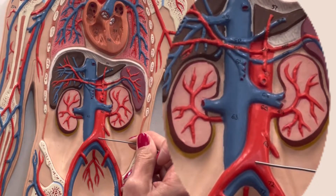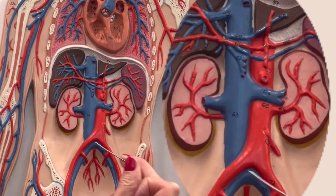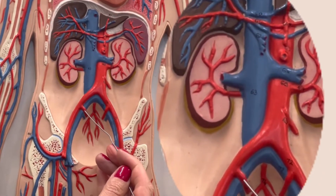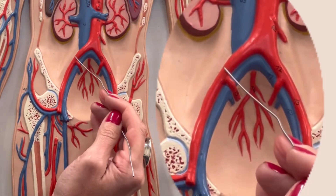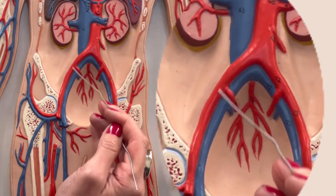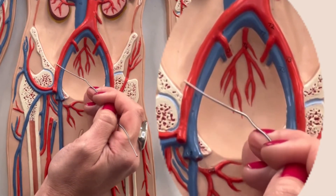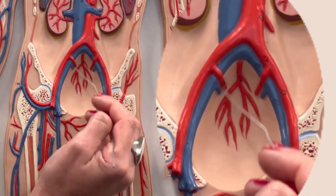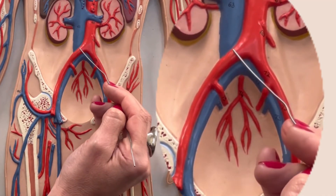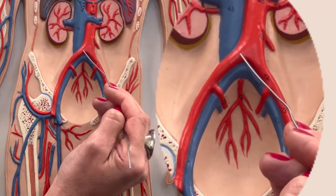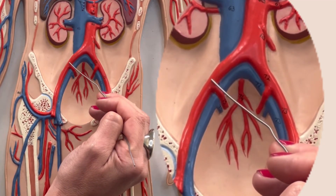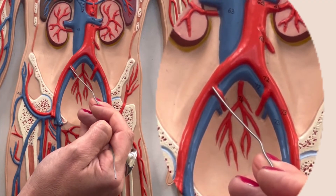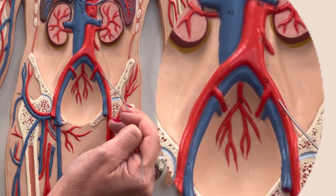The abdominal aorta ends by splitting into two arteries, which are named the common iliac arteries. The common iliac arteries split — that's why they were named common. When they split, you have the external iliac artery on the external aspect and the internal iliac artery, which stays internally, going towards the pelvic cavity. This is the right side and this is the left side, so this would be the right common iliac artery. After it splits, we have the right external iliac artery and the right internal iliac artery, and the same on the left side.